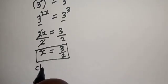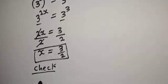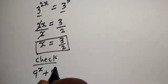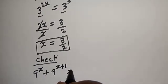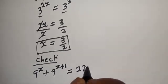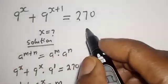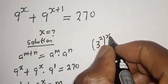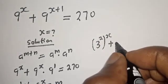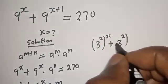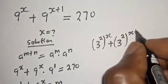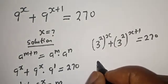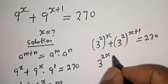Let's check. We have the given equation: 9 raised to power s plus 9 raised to power s plus 1 is equal to 270. So 9 raised to power s can be written as 3 squared to the power of s, plus 3 squared to the power of s plus 1, must equal 270. This gives 3 raised to power 2s plus 3 raised to power 2s plus 2 must equal 270.